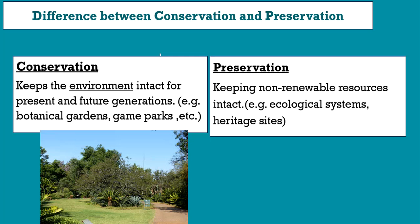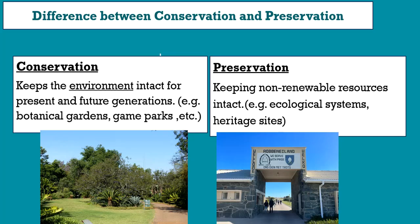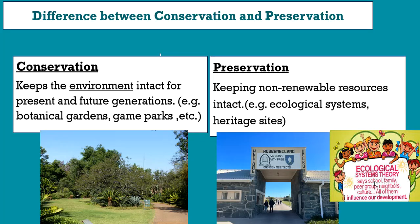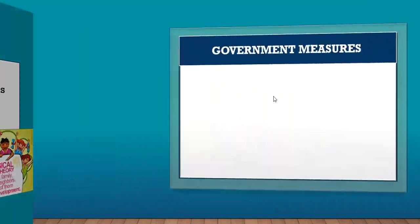We see a picture of a botanical garden — keeping botanical gardens, game parks, or safaris with wild animals intact is called conservation. But keeping heritage sites like Robben Island intact, because it is a heritage site with a rich history, is preservation. Ecological systems — school, family, peer groups, neighbors, and culture — all these must be kept intact throughout the generations. That is preservation.